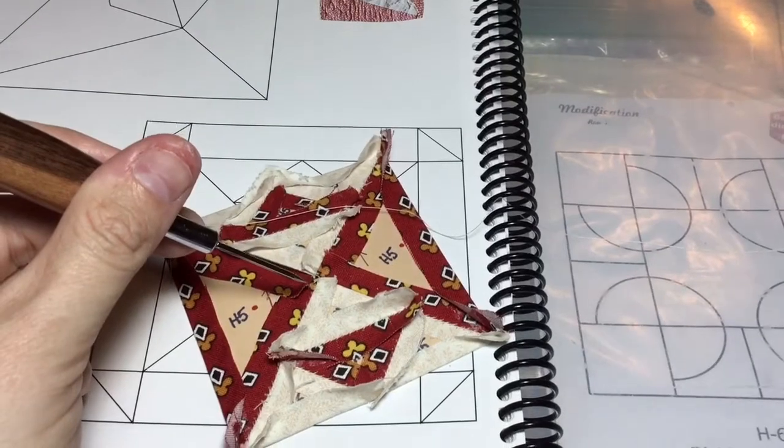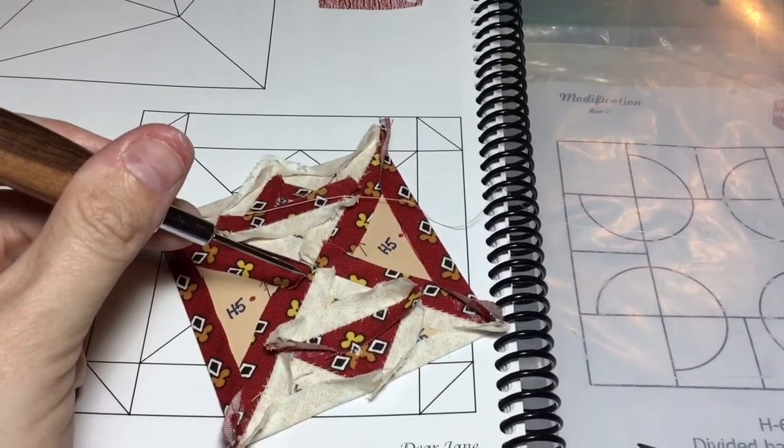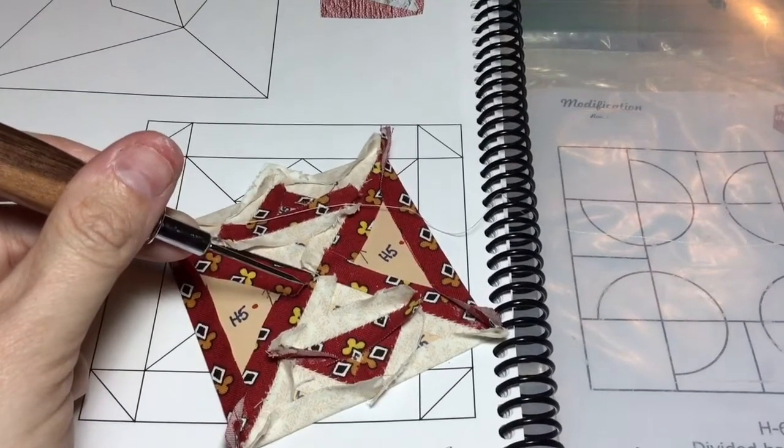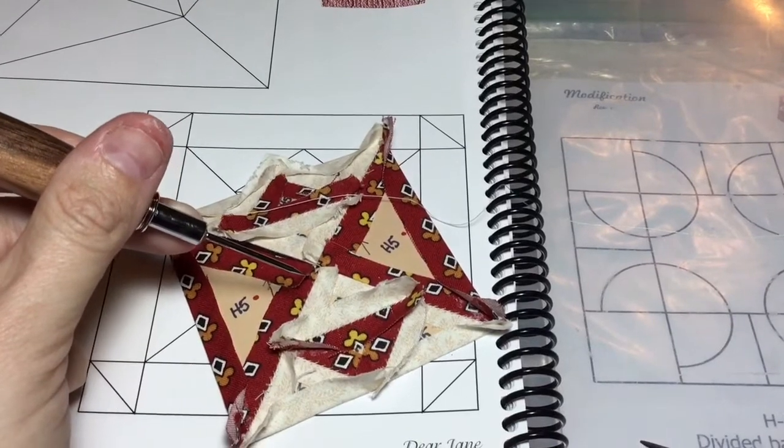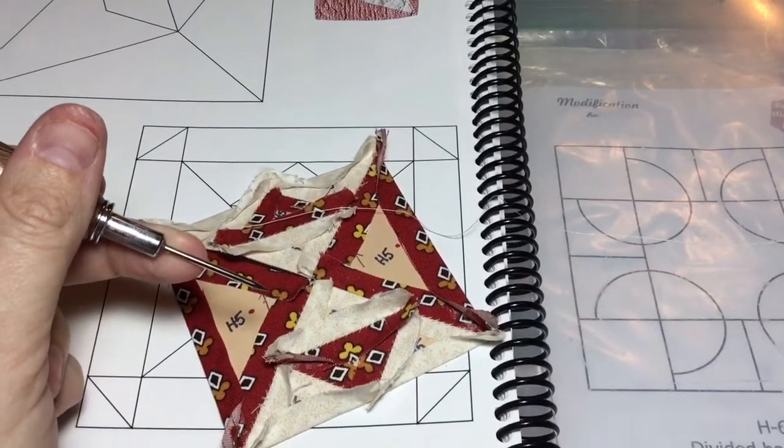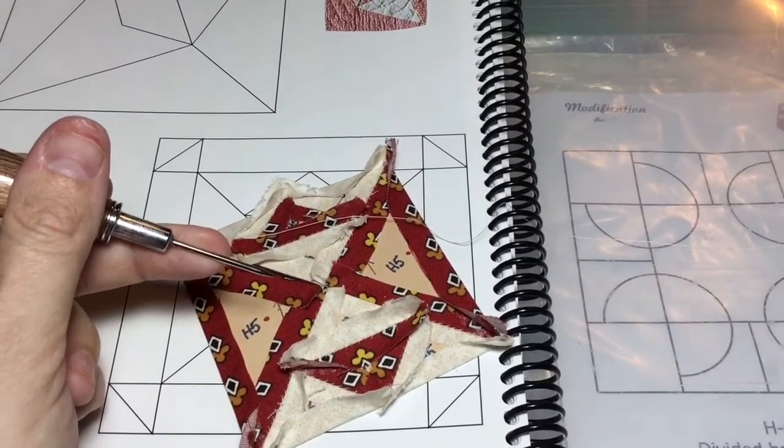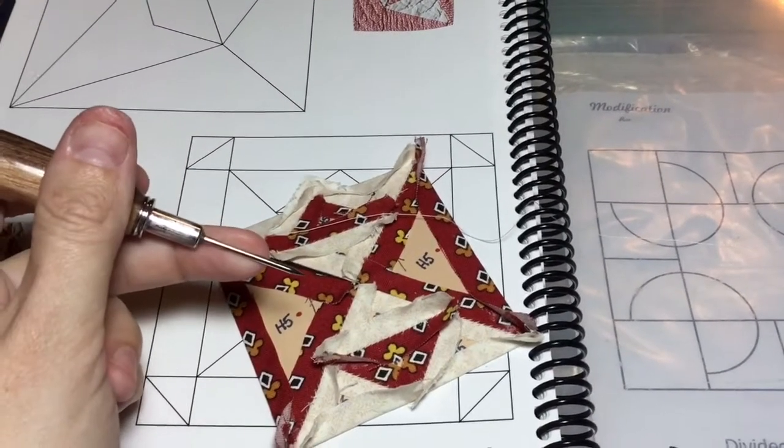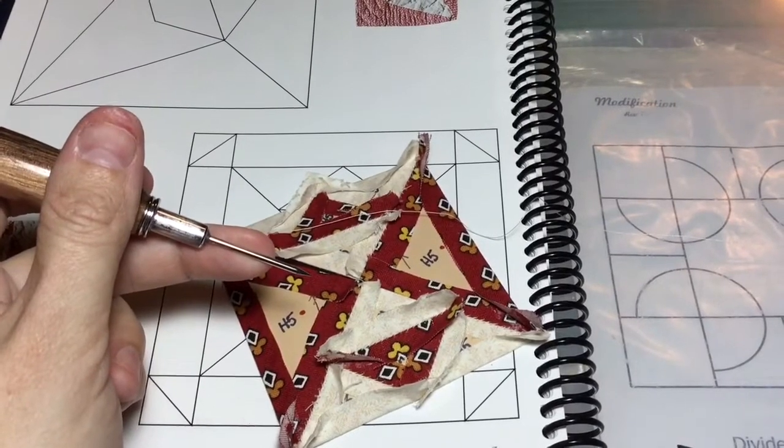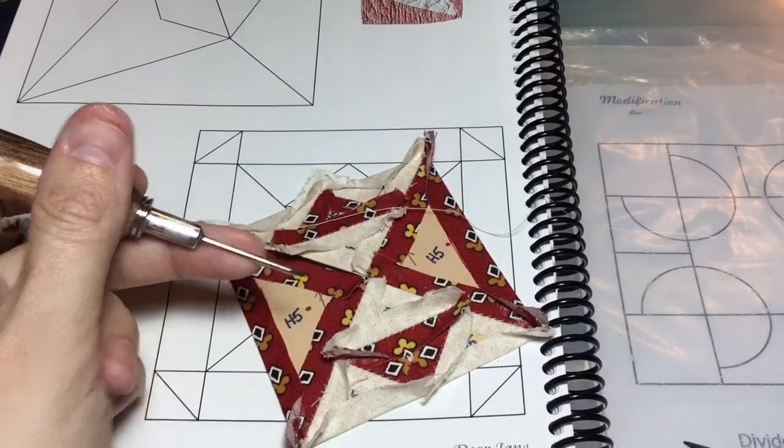I use this with my sashings and my cornerstones because if I'm putting sashings on my blocks that have little bits in the corners I want to make sure that I go past that first seam because otherwise it for some reason puckers up. So if you get that first seam stabilized then it's a lot easier to do.